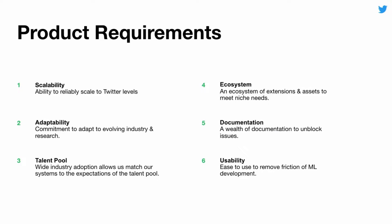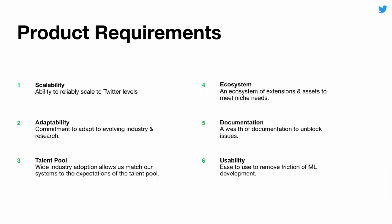With the goal of a shared ML platform across all of Twitter, we looked at a few product requirements. First, it needs to be scalable — able to operate at Twitter scale. Second, it needs to be adaptable, since this space is developing quickly and we need a platform that can evolve. Third is the talent pool — we want a development environment that appeals to the ML researchers and engineers we're hiring. Fourth is the ecosystem — we want to lean on partners developing industry-leading tools so we can focus on Twitter-specific technologies. Fifth is documentation — to quickly unblock practitioners as they hit issues. And finally, usability — removing friction and frustration so our team can focus on delivering value for end customers.